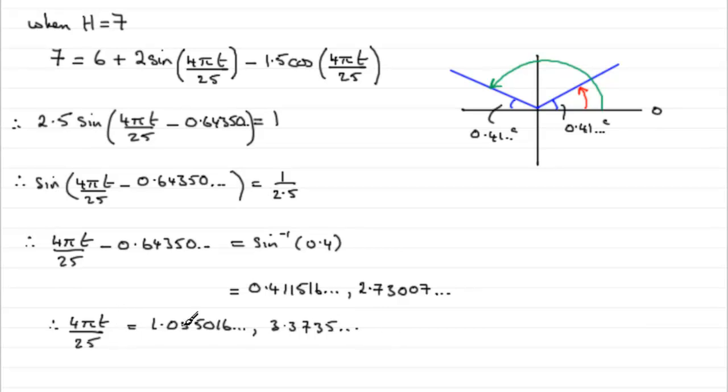Now to get t, we need to multiply each of these by 25, and then divide by 4 pi. And if you do that, you'll find that you get t equals 2.0988, and so on, and 6.71136, and so on.